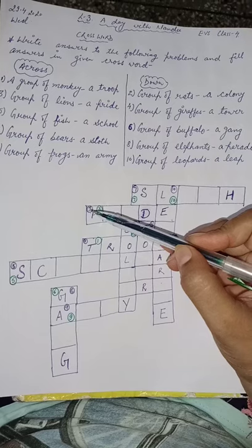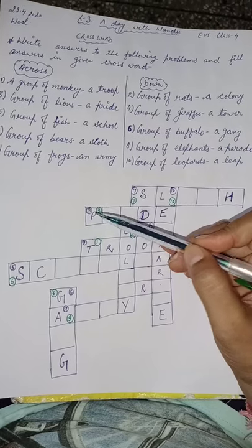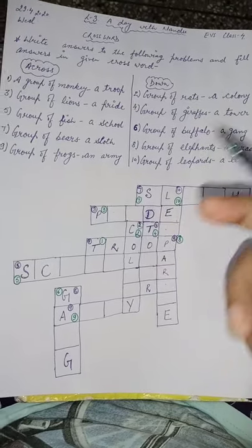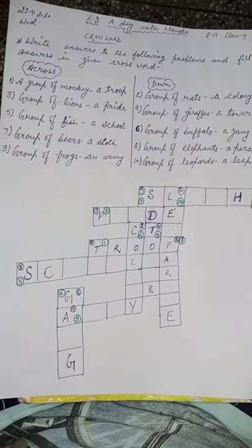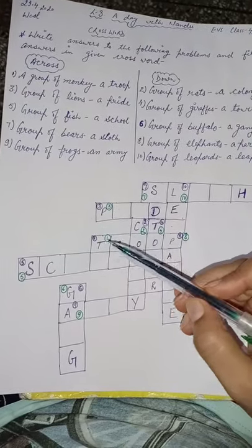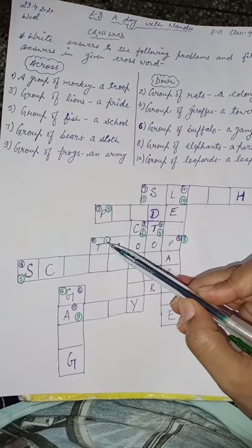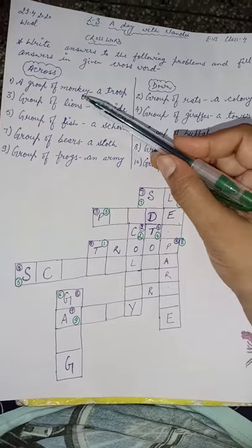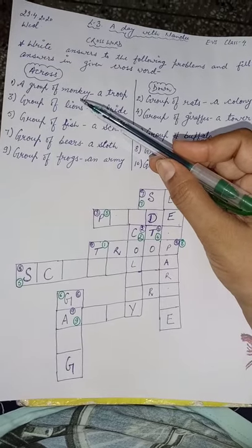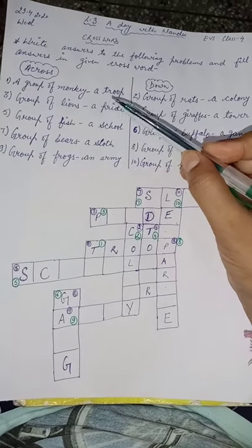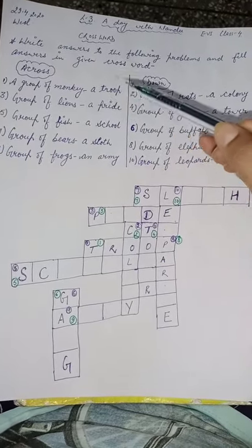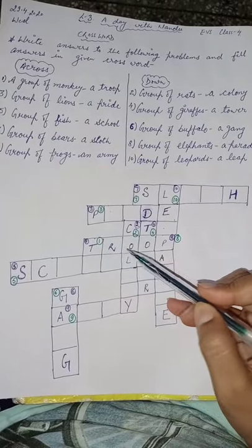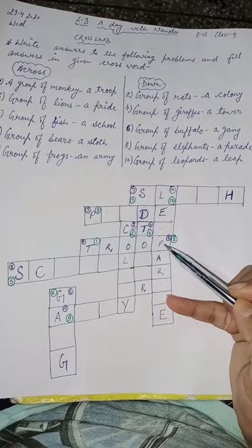I thought it was not so visible, so I wrote it with a green pen so that it can be visible to you easily. See, this is number 1. On number 1 you have to write the first answer — what is the group of monkeys called? It is called a troop, so I have written here T-R-O-O-P.